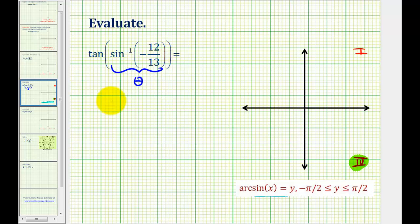So another way to express this would be to say that sine theta must equal negative 12 thirteenths. And then to evaluate this expression, we need to determine tangent theta.